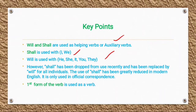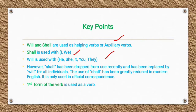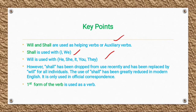However, 'shall' has been dropped from use recently and has been replaced by 'will' for all individuals. The use of 'shall' has been greatly reduced in modern English. It is only used in official correspondence. So we now use 'will' with all subjects — I, we, you, they, he, she, it.